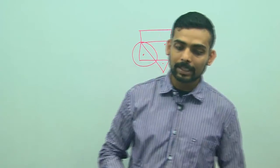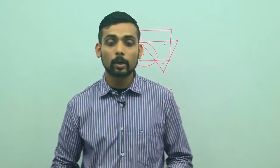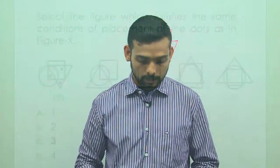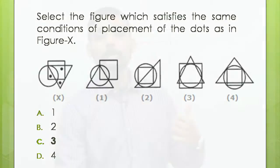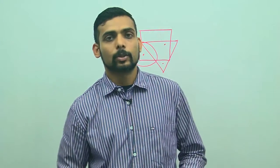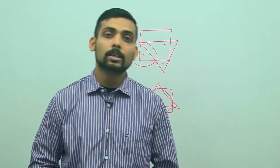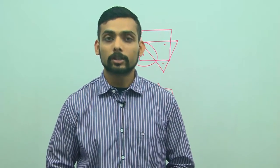Figure 4 does not satisfy all these conditions. So I am going to select option C as my answer choice, and this is how we solve dot situations. I hope this video was helpful and you will be able to answer questions on dot situation in the examination. I will see you again with another topic — see you then. Thank you.